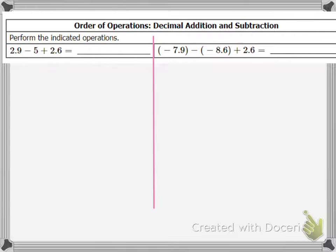I see I have 2.9 minus 5 plus 2.6. My only two operations are addition and subtraction. So according to the order of operations, I just work these operations from left to right.